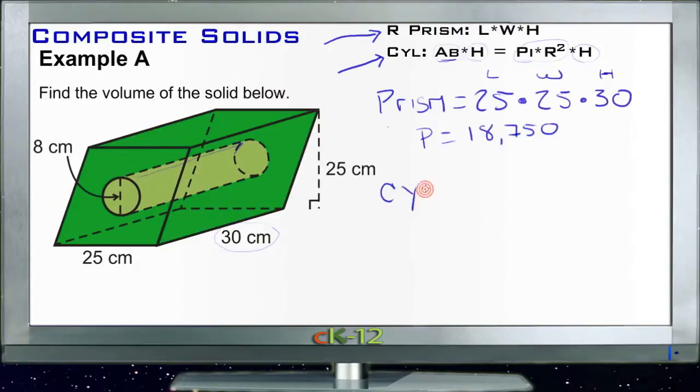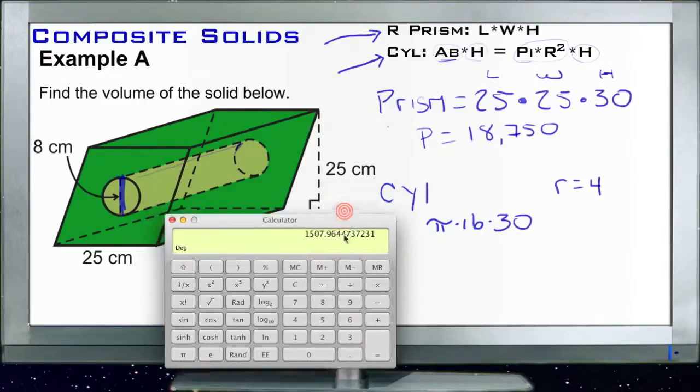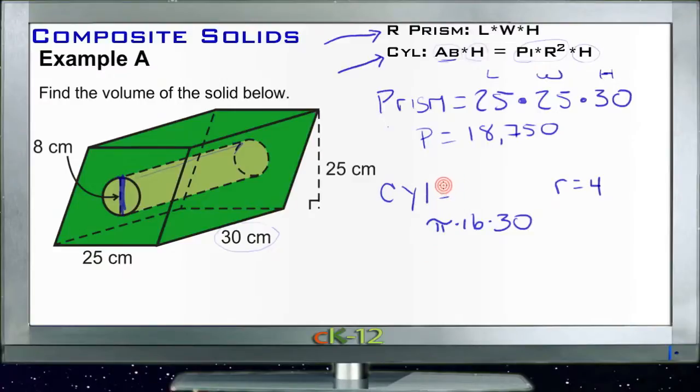And then our cylinder is area of the base times the height. Well the area of the base is pi r squared, right? So we have 8 centimeters for our diameter clear across here. So our radius then will be half of that, so the cylinder radius is only going to be 4. So we're going to have pi times 4 squared, which is 16, times our height, which was 30. So we're going to pull out our calculator again, and we got pi times 16 times 30 gives us 1508.